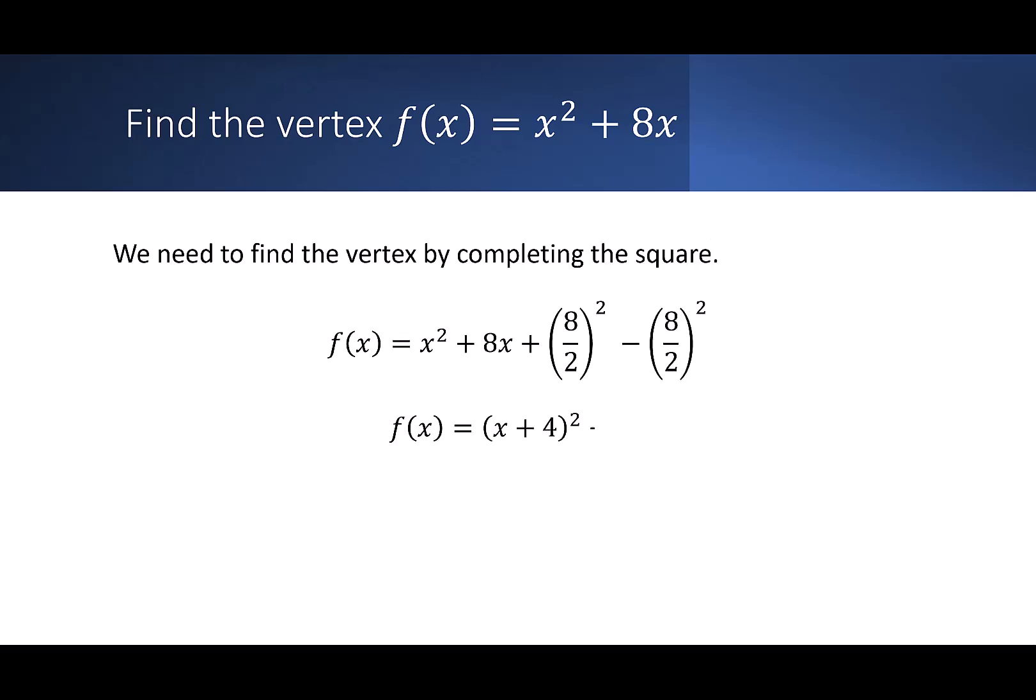This ensures that I haven't really changed the overall value of the function. I just changed the looks. From here, x² + 8x + (8/2)² becomes (x + 4)². Because 8/2 is 4, and 4² is 16, I have a minus 16 at the end. Now that I've completed the square, I can see that the vertex is at (-4, -16).